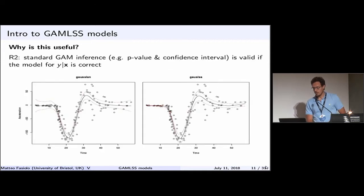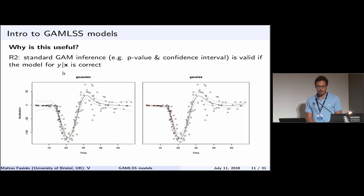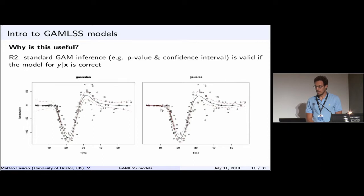A second reason: when doing inference with GAMs, outputs like p-values and confidence intervals are valid only if the model for the conditional density is at least approximately correct. If the residual variance is not constant, you can't quite trust p-values or confidence intervals. For example, with the motorcycle dataset, fitting a Gaussian with constant variance causes confidence intervals to badly overestimate uncertainty in some regions, while allowing variance to vary with time gives better coverage.